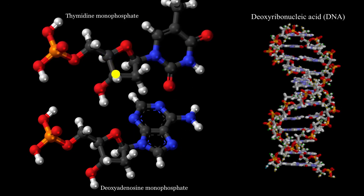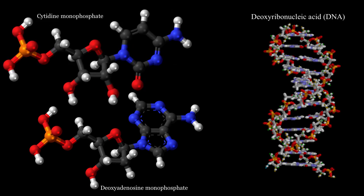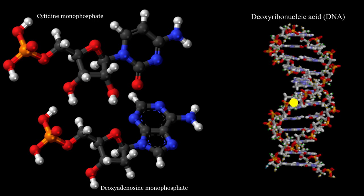Adenine is not the only nitrogenous base. You could have a nucleotide where the nitrogenous base is thymine. Once again, this looks very similar, but notice what is going on over here — you have your five-carbon sugar, your phosphate group, but the nitrogenous base keeps on changing. It's the order of these different nucleotides that actually encodes the information in DNA.